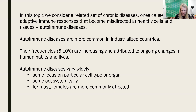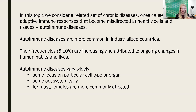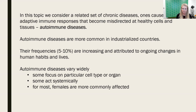Autoimmune diseases are grouped together based on the attacking of self-tissue, but there is a lot of variability across these different diseases in the types of tissue that are affected. Is it widespread or very focused on a certain specific cell type? Does it affect males or females more often? There is a very wide variety.